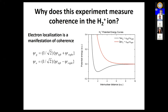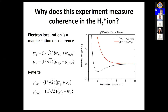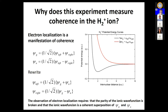The plus sign indicates finite electron density between the two protons — a bonding orbital. The minus sign indicates a node — a repulsive state. In order to find the electron preferentially on the left or right in H2+, we must have put the molecule in a coherent superposition of the gerade and ungerade states, breaking the parity of the ionic wave function. That is why electron localization measures the electronic coherence in the ion.